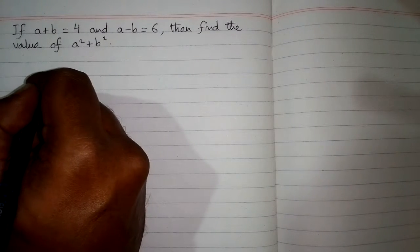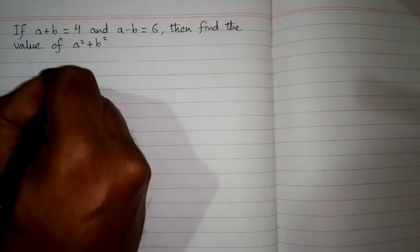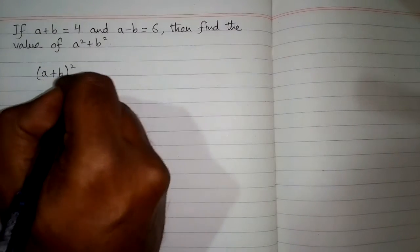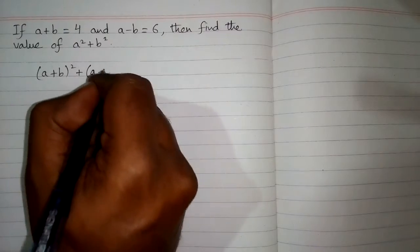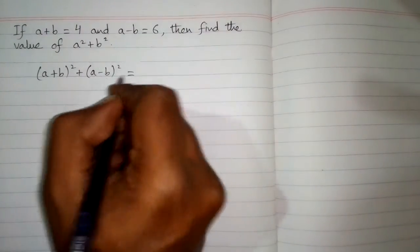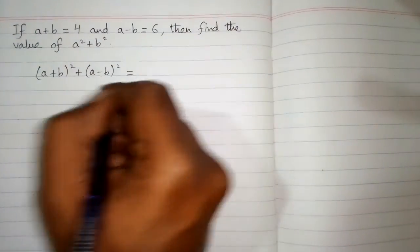In order to solve this problem we will use algebraic identity a plus b whole square and a minus b whole square and we will add these identities.